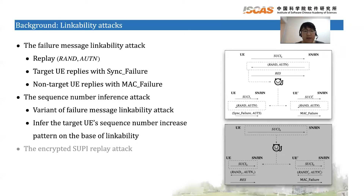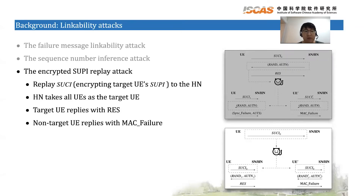In the failure message linkability attack, the attacker replays RAND and AUTN. The target UE will reply with synchronization failure. The non-target UE will reply with MAC failure. The sequence number inference attack is a variant of the failure message linkability attack, where the attacker can infer the target UE's sequence number increase pattern on the basis of linkability. In the encrypted SUPI replay attack, the attacker replays SUCI to the HN, where SUCI encrypts the target UE's SUPI. The HN will then treat all UEs as the target UE. In such attack scenarios, the target UE will reply with a response, while the non-target UE will reply with MAC failure.